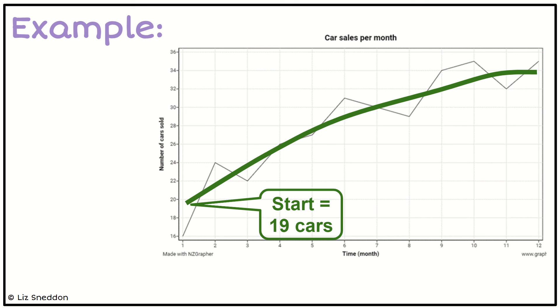The actual data value, the black line, it starts at 16. But that's not the value we're going to use to describe the trend. We want to use the green trend values. So the end trend value is about 34 cars. So those are the values we're now going to use to describe what the trend is doing.